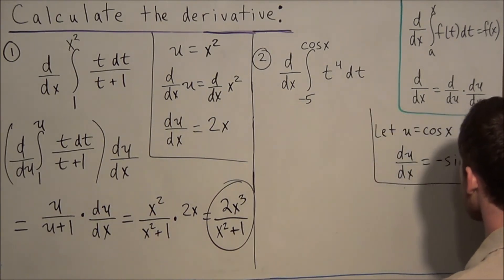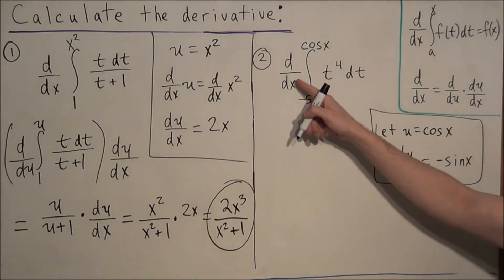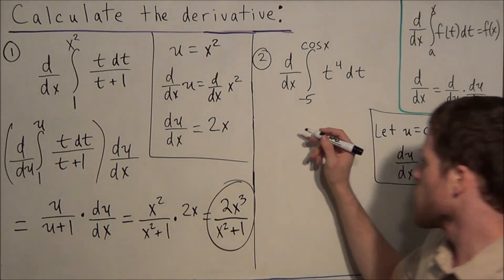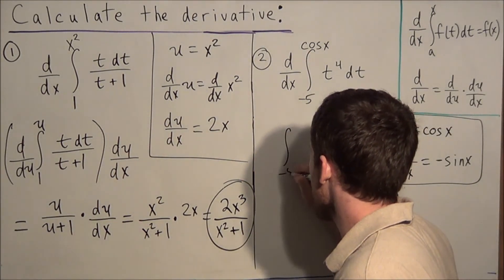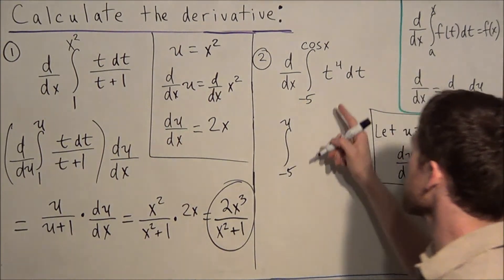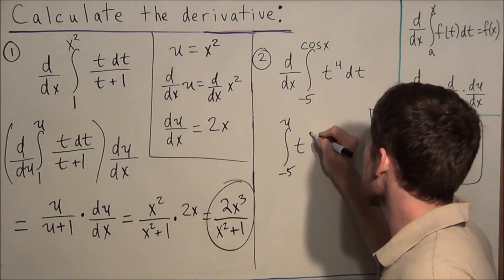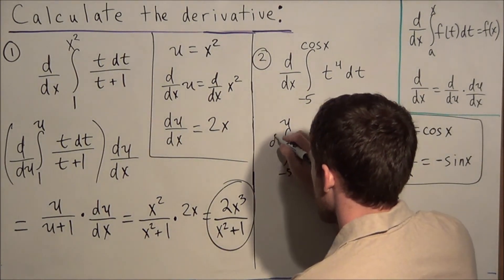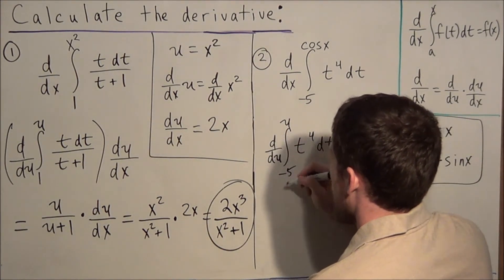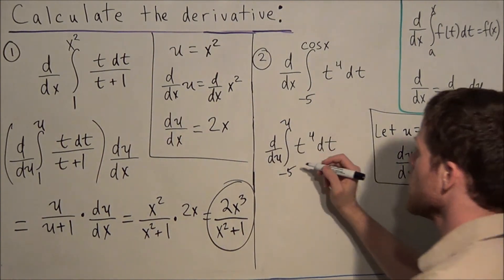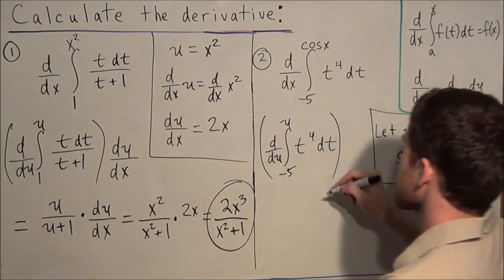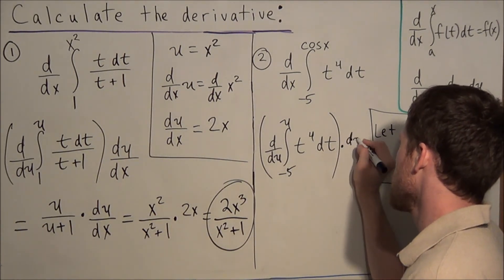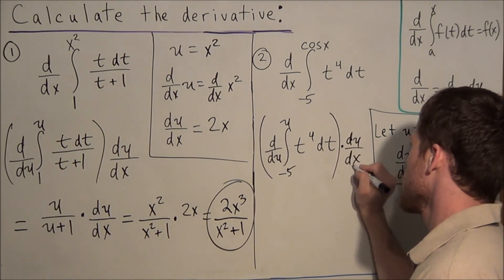We'll use both pieces of information to rewrite this integral in terms of u so we can simplify. We rewrite it from negative 5 up to u with t to the 4th dt. Now we take d/du of this integral since the variable is in terms of u, and multiply by du/dx so we can go back to d/dx.